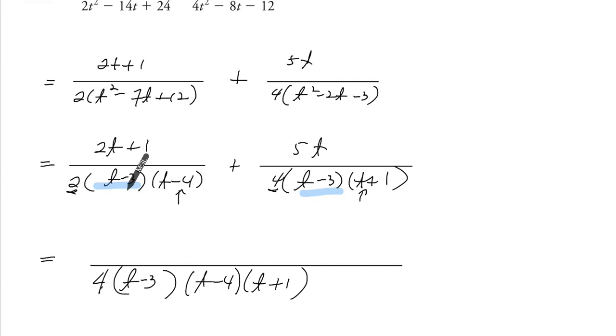Okay, so how did this become this? Well, we need an extra two, but we also need an extra t plus 1. For 5t, how did this become this? We just need one extra factor, which is t minus 4.